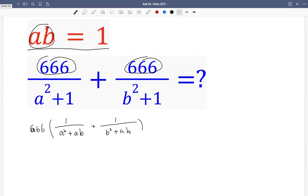So then we can factor out A. So 666, the denominator, we can factor out A to get A times A plus B. And this one, we can factor out B. Now we have B plus A.